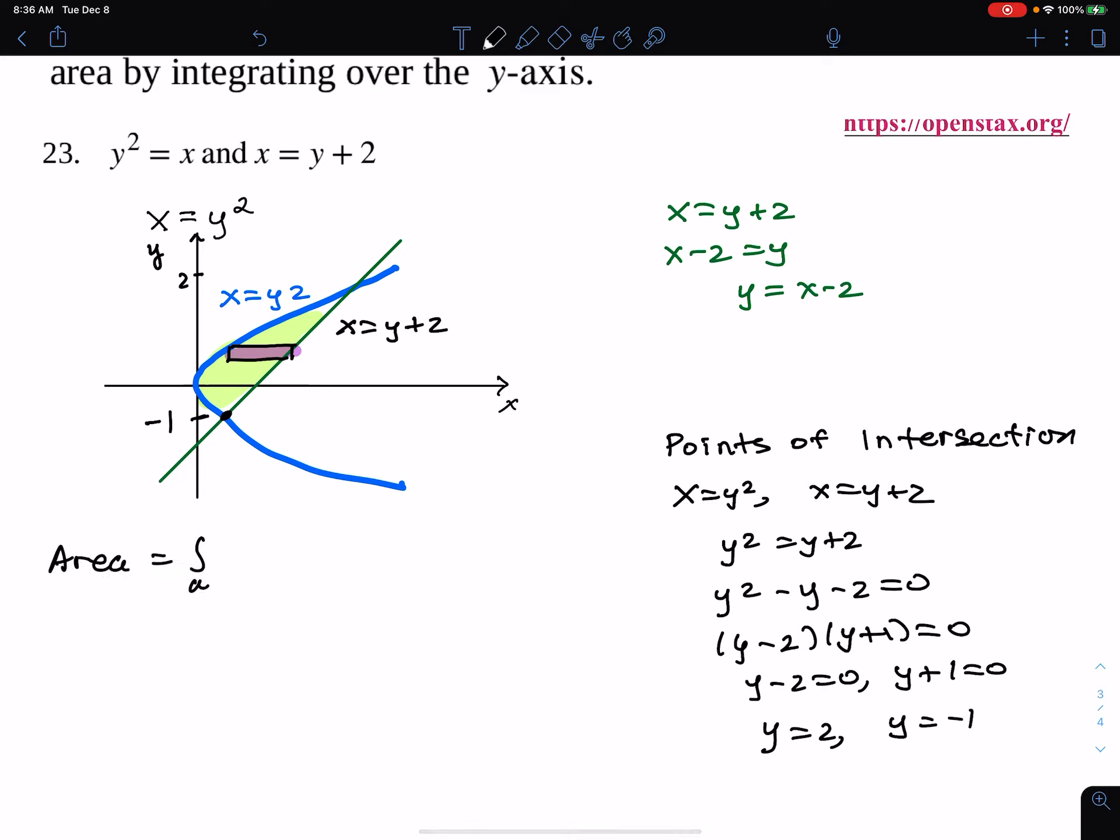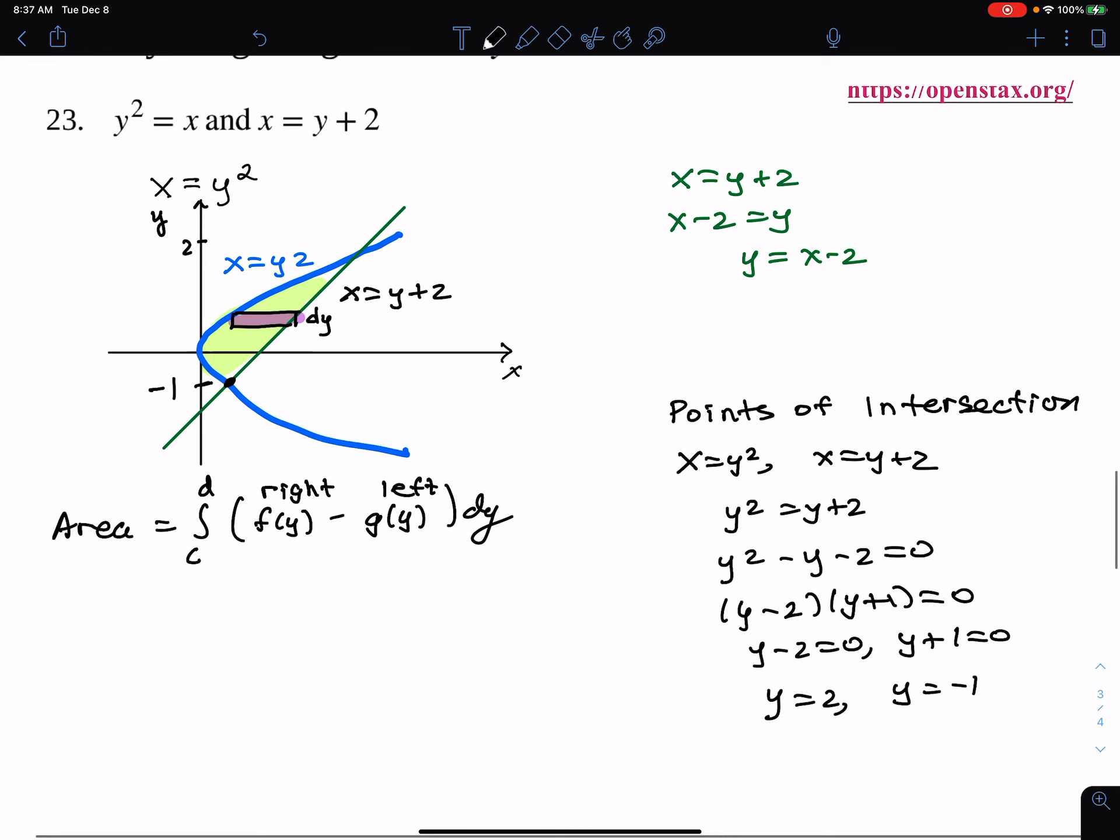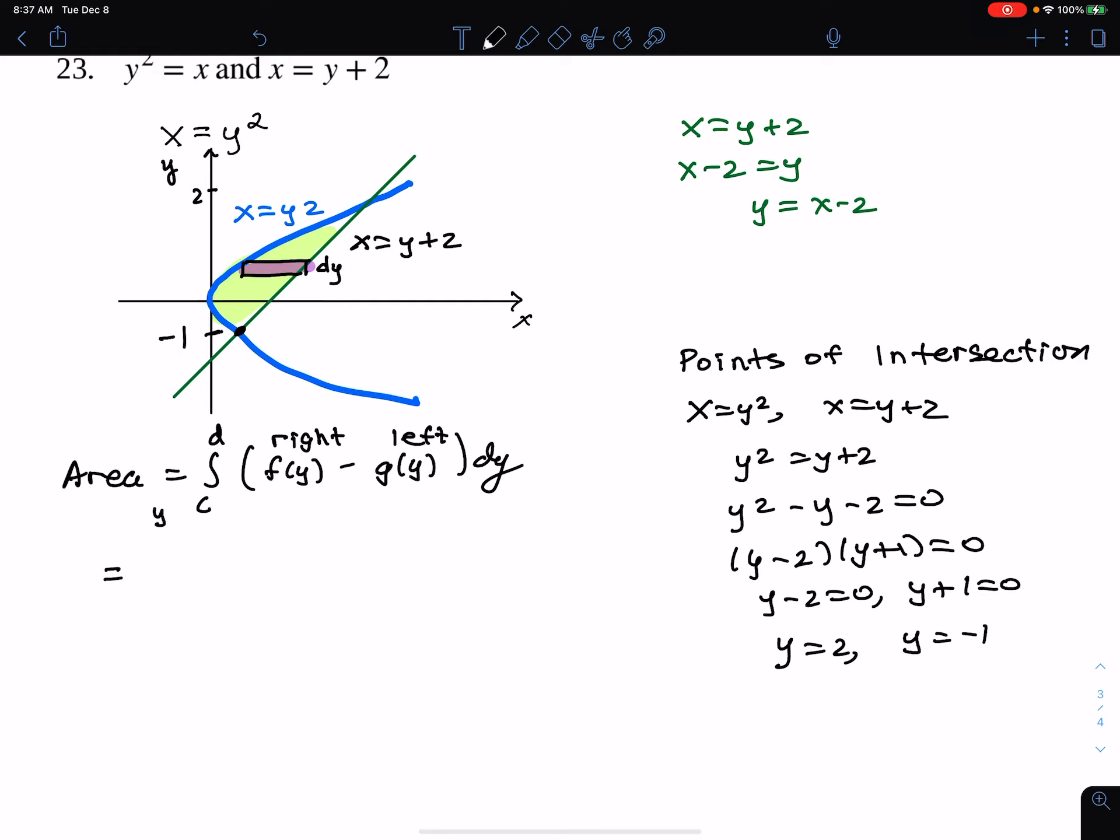From, let's say, c to d, being y values of our right function, function on the right, f of y, and then we'll subtract the left function. And then it's dy. Our little rectangle there has height d of y. I'm going to integrate from y equals c, y equals d. That's important that these are all y values. Everything's y. So including our bounds are y equals negative one to y equals two. All y. On the right is y plus two. On the left is y squared.